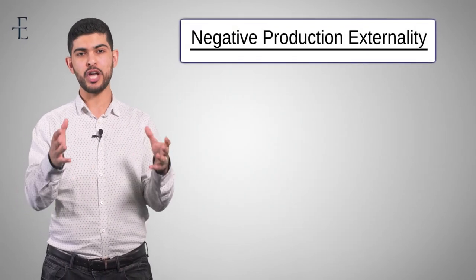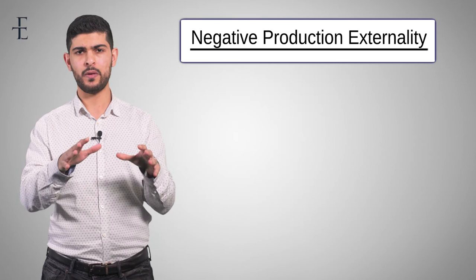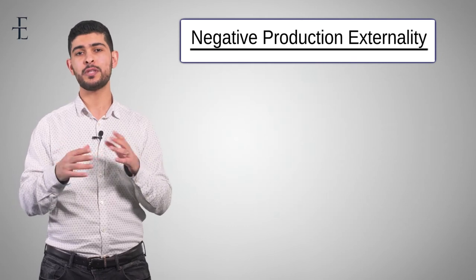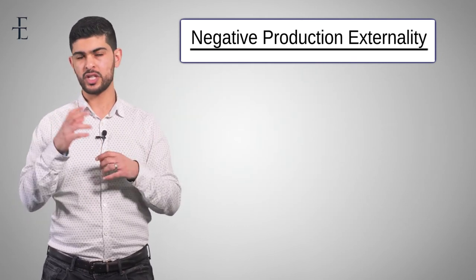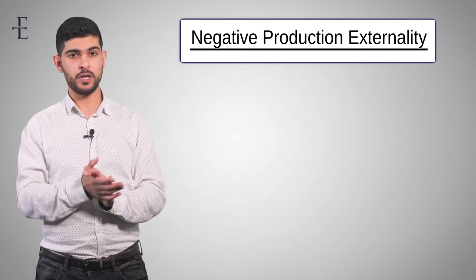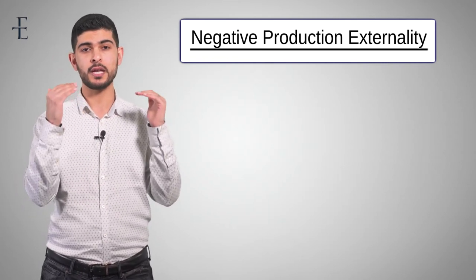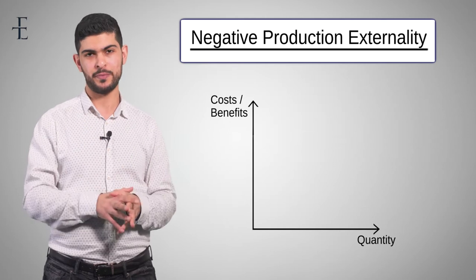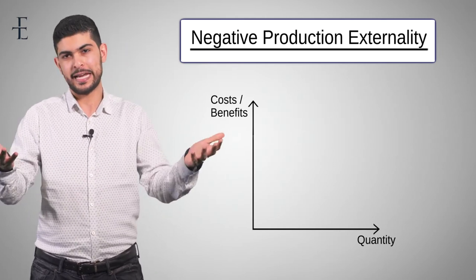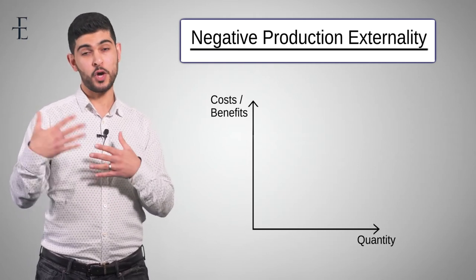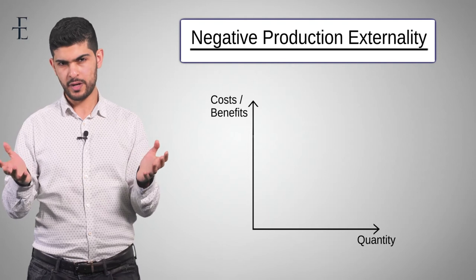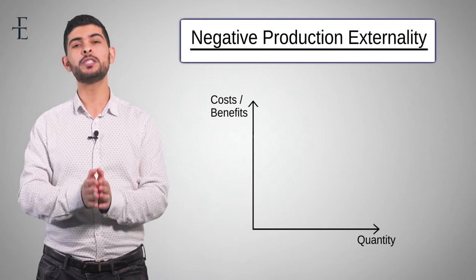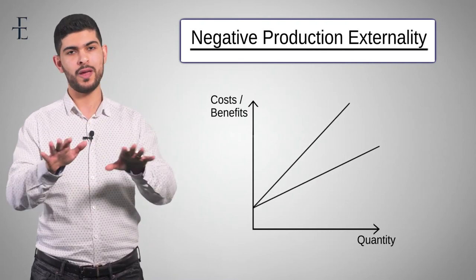Write the heading: Negative Production Externality. Bear in mind, for those on the Edexcel specification, there are only two diagrams expected — positive and negative — so production versus consumption doesn't make much difference. We're going to go through a systematic step-by-step to pick up every single mark on this diagram. Step one: is this a negative or positive externality? It's negative. Therefore, is it to do with costs or benefits? Costs. So the moment you know you're dealing with a negative externality, draw two slightly pivoted upward sloping lines — but don't label them just yet.